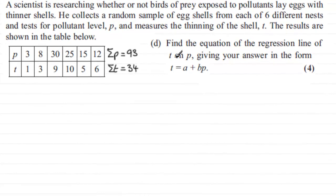Hi. Now in this next part, what we've got to do is find the equation of the regression line of t on p, giving your answer in the form t equals a plus bp. So if you haven't tried this question already, just pause the video, come back when ready and I'll run through the work solution.